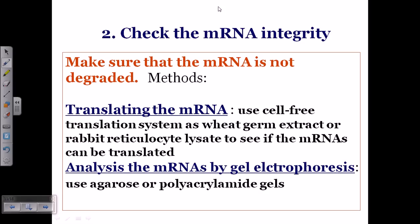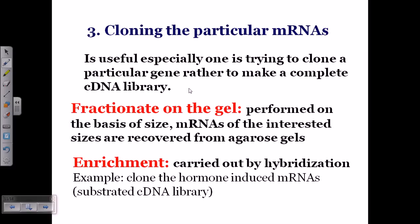Step two — checking mRNA integrity. It is very important to make sure the mRNA is not degraded. This can be done in two ways: first, using a cell-free translation system to translate the mRNA and check the protein products; second, running the mRNA on agarose gel electrophoresis and analyzing the banding pattern. If the correct banding pattern is present, the mRNA is intact and good to proceed. Integrity of mRNA is important for all future reactions.